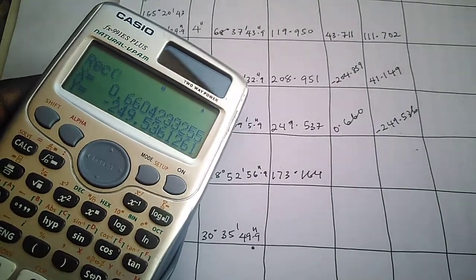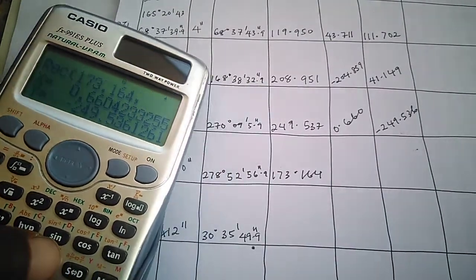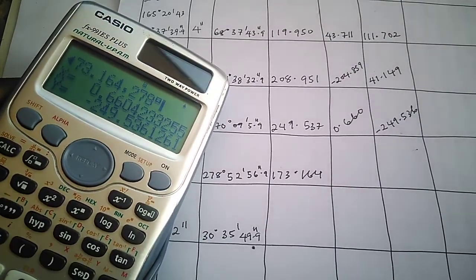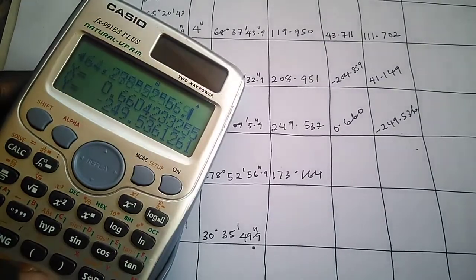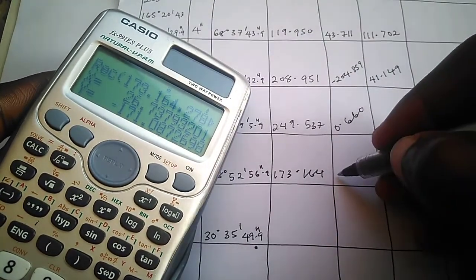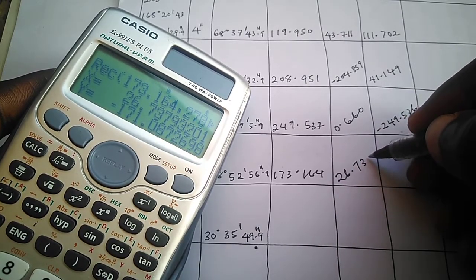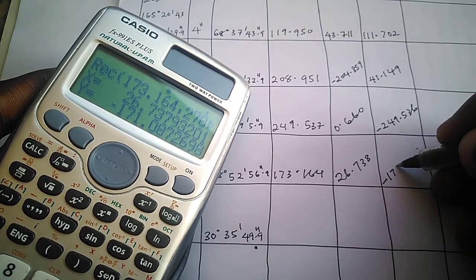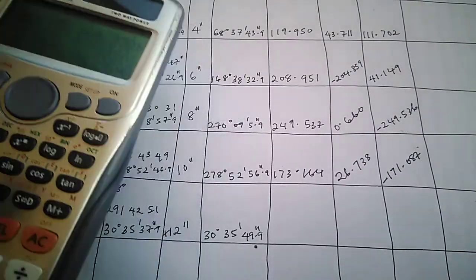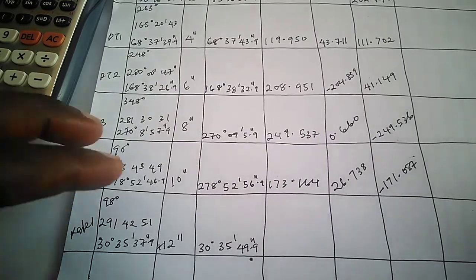For the last line, we have a distance of 173.164, comma, and the bearing is 278 degrees 52 minutes 56.9 seconds. That gives us a delta northing of 26.738 and a delta easting of minus 171.087. So these are our partial coordinates — our latitude and departure — for all these distances and bearings.